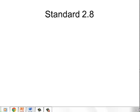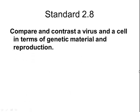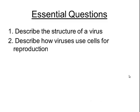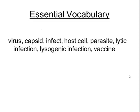Here we're going to take a look at standard 2.8, which is all about viruses. In this standard, we're going to compare and contrast a virus and a cell, looking at it in terms of genetic material and how they reproduce. You'll be able to describe the structure of a virus and how viruses use cells for reproduction — we're going to look at two different ways. Essential vocabulary includes the lytic and lysogenic cycles.